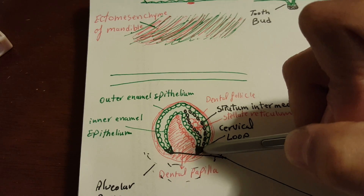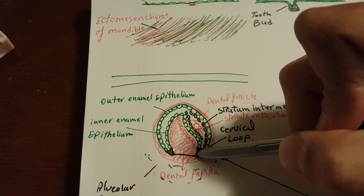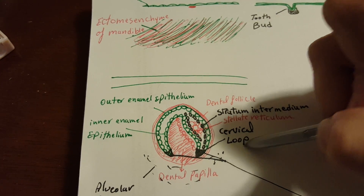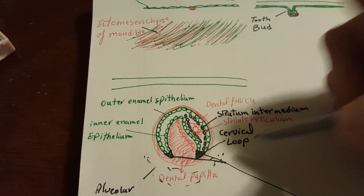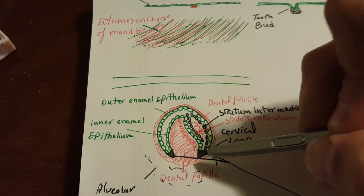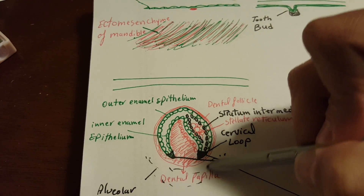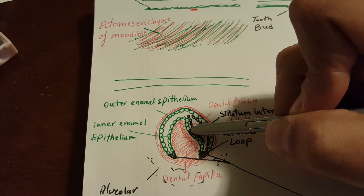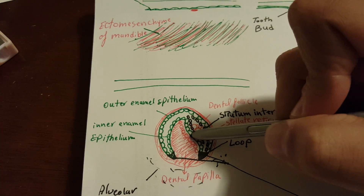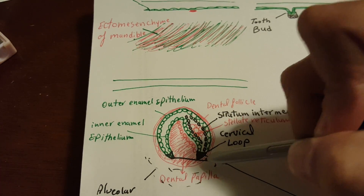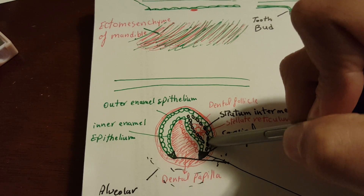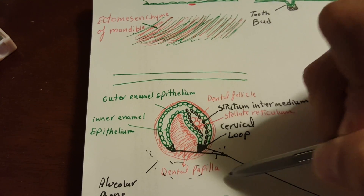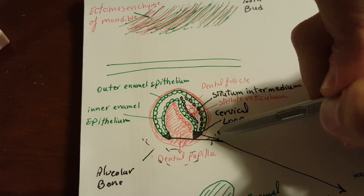The area at the tip where the outer enamel epithelium meets with the inner enamel epithelium is called the cervical loop, which has great importance in the formation of the root — we'll get back to this. So the enamel organ has differentiated into inner and outer enamel epithelium, which meet at the cervical loop, with the stratum intermedium and stellate reticulum between them. By this time, the alveolar bone is also being formed.